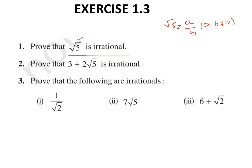After assuming root 5 = a/b with a and b co-prime, square both sides: 5b² = a². So 5 divides a², which means 5 divides a. Then write a = 5c for some integer c. Substitute back: 5b² = 25c², so b² = 5c². This shows 5 divides b² and therefore 5 divides b. Now 5 divides both a and b, which contradicts a and b being co-prime — so root 5 is irrational.